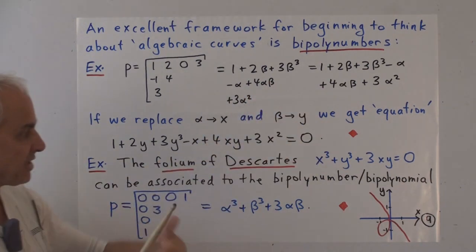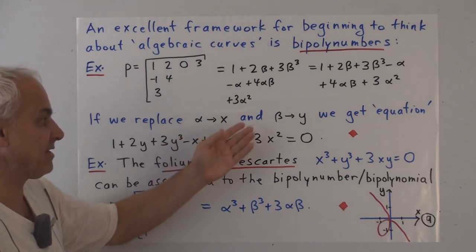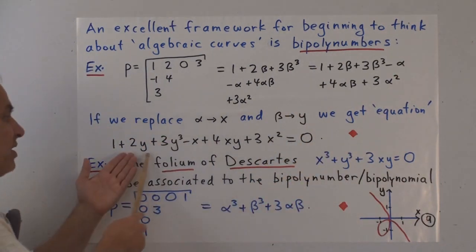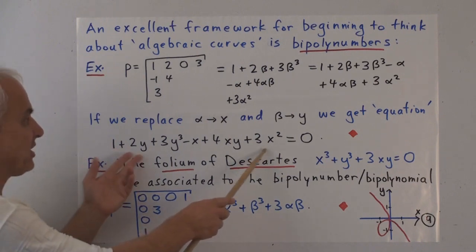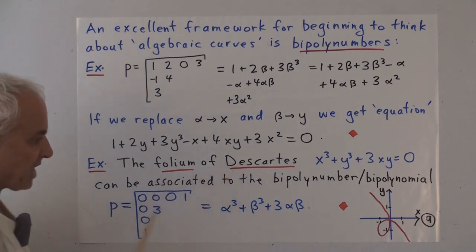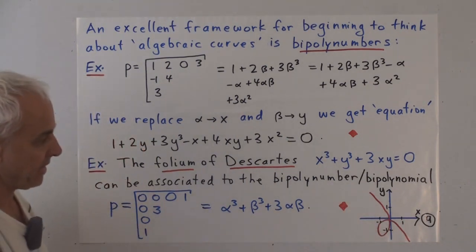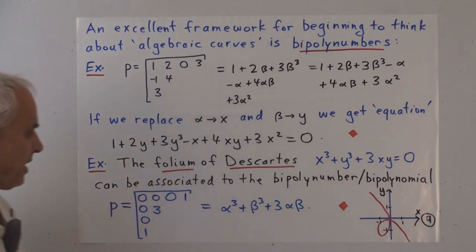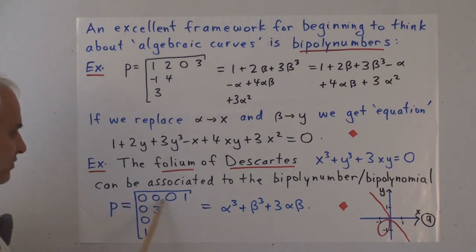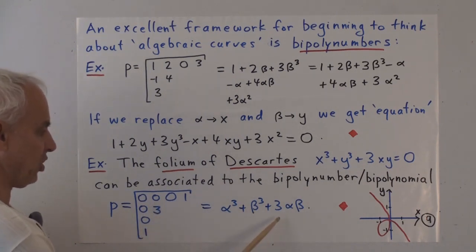Now to connect it to the discussion we've just been having, we can replace alpha with x and beta with y, for example, to get an equation. So associated to this we can say we can just think about this equation. This equation is somehow intimately connected with this bi-poly number. Some examples: the folium of Descartes, which is a cubic, has this equation. It can be associated to the bi-poly number or bi-polynomial right here. This represents the x cubed, this represents the y cubed, this represents the 3xy. As a bi-poly number it's alpha cubed plus beta cubed plus 3 alpha beta. Whether we're studying this thing or this thing, maybe they're somehow connected.